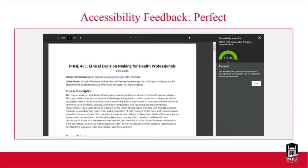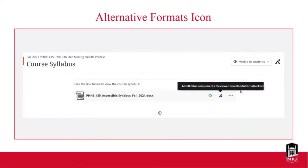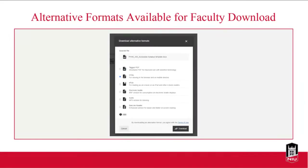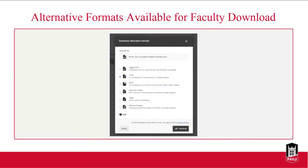The higher your score, the fewer the issues there are. The alternative formats icon looks like an 'A' with an arrow — that's where you can download alternative formats. It sits right next to the gauge next to the file. Clicking it shows what alternative formats are available for that file. It's not just for students — you can also download an alternative format of a file you've uploaded. What's available depends on the particular file and its accessibility.